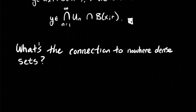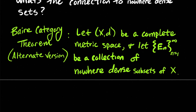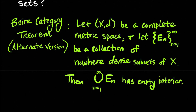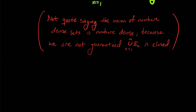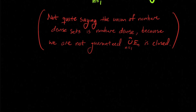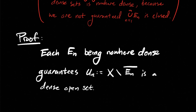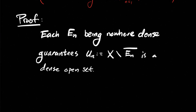Here's an alternate version of the Baire Category Theorem. Let X, d be a complete metric space — that hypothesis is crucial — and let E_n be a countable collection of nowhere dense subsets of X, indexed by n from 1 to infinity. Then the union of these nowhere dense sets is guaranteed to have an empty interior. Note we're not saying the union of nowhere dense sets is still nowhere dense, since we're not guaranteed that their union is closed.